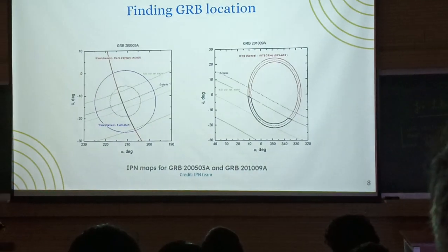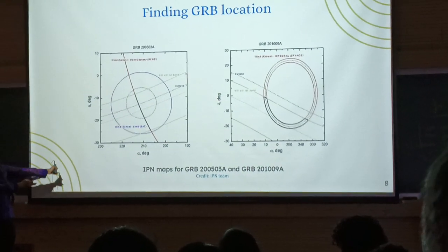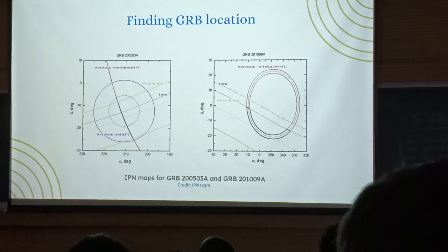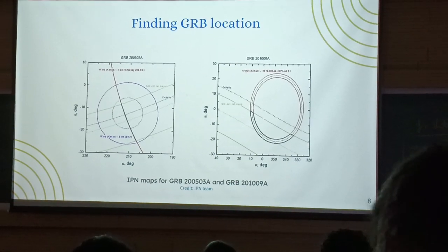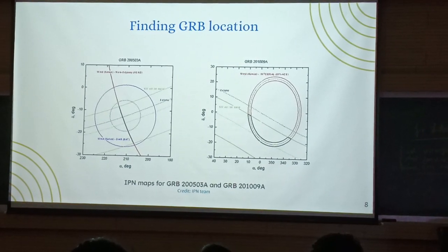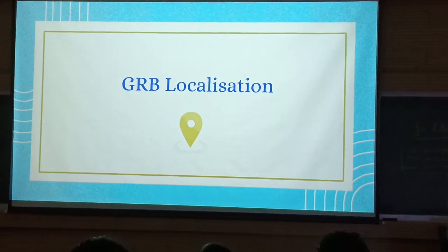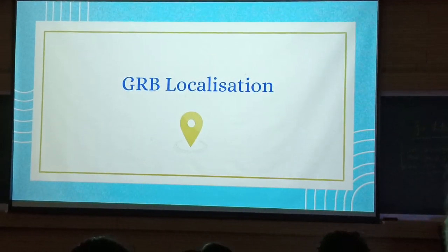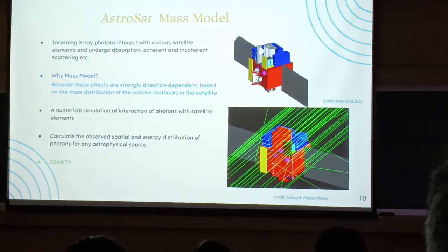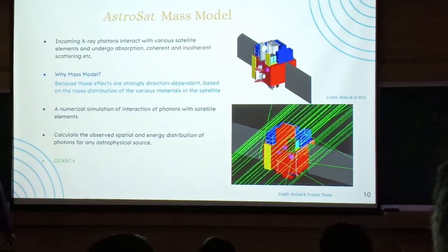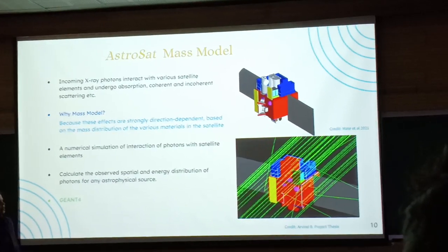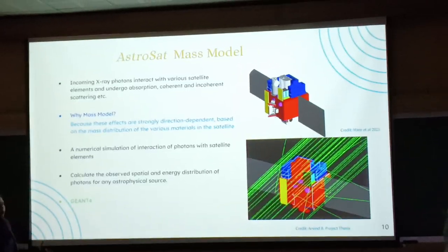This is a big region — a very crude localization. So what we do brings it back to my first area of work: GRB localization. For that, we use the AstroSat mass model, which is basically a numerical simulation of the whole satellite. It is called the mass model because it depends on the mass of each component of the satellite.